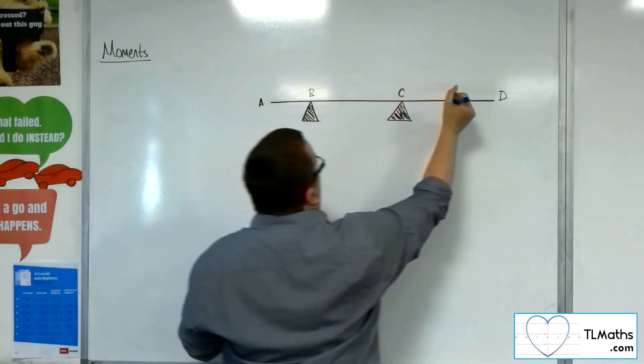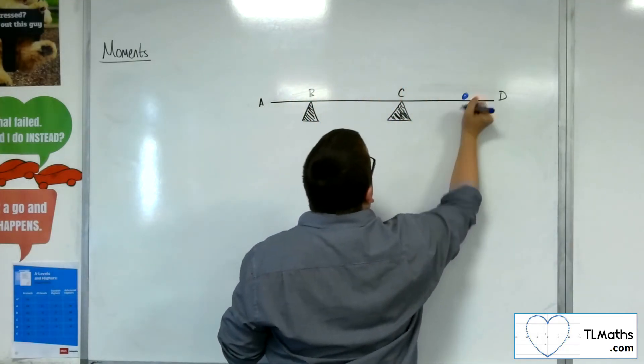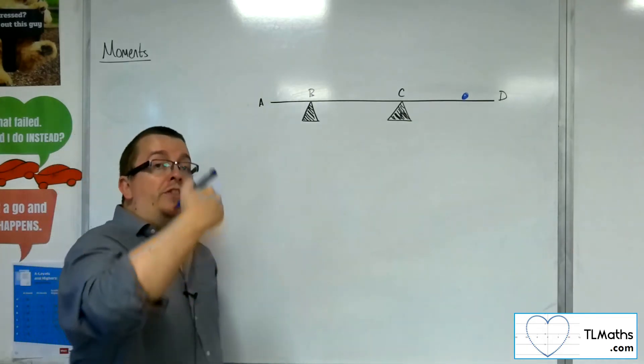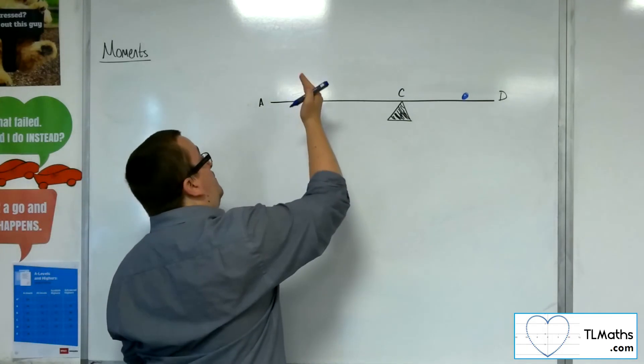so if I put the point over here, for example, then I know it would have to be tilting around C, which means the normal reaction force at B will be zero.